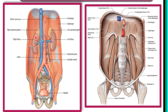Here we're also seeing the posterior abdominal region with some of its contents. This region lies posterior to the gastrointestinal tract, as well as the spleen, pancreas, and other associated organs. Here we're seeing part of the kidney and then the major vessels in this region.